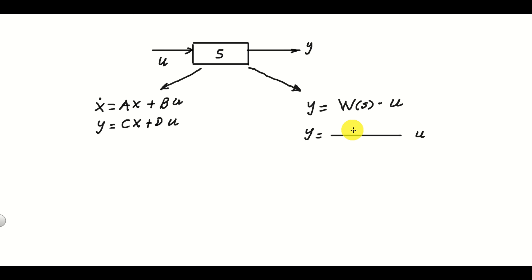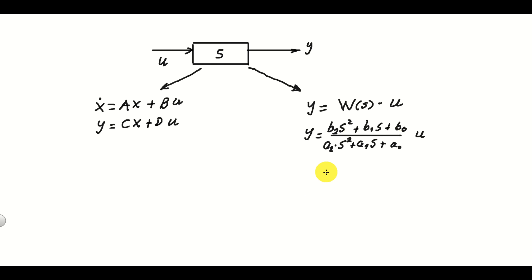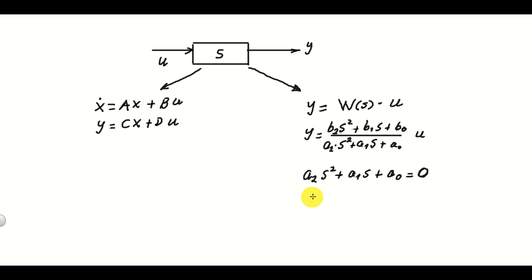For clarity I will consider a second order system. We will have a polynomial in the denominator that looks like this, and in the numerator a polynomial that looks like this. Now, what are the poles of this system? The poles are actually the zeros of the polynomial in the denominator of this transfer function — that is, the S values that satisfy this equation are called the poles.